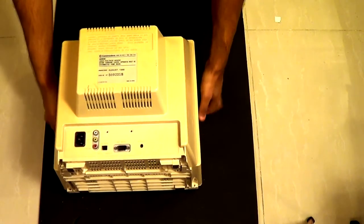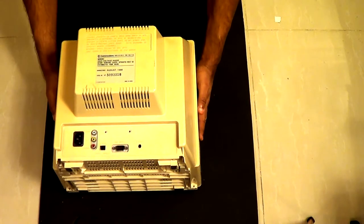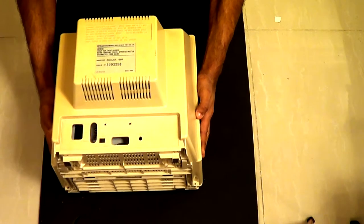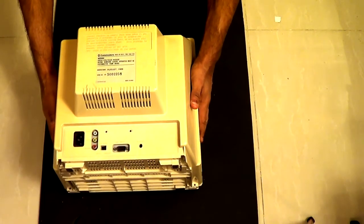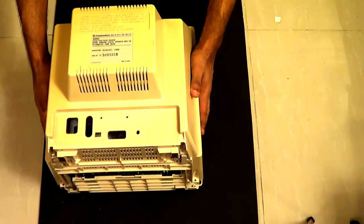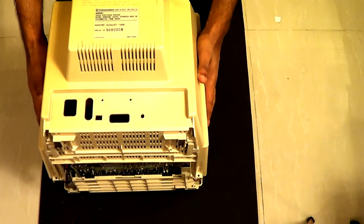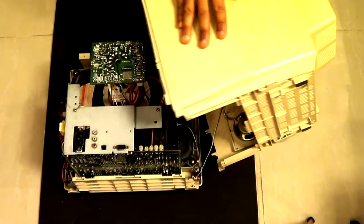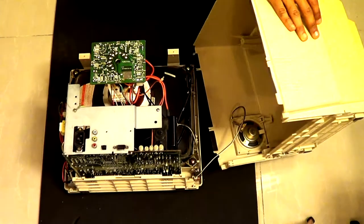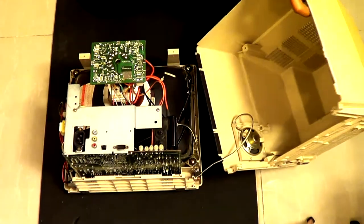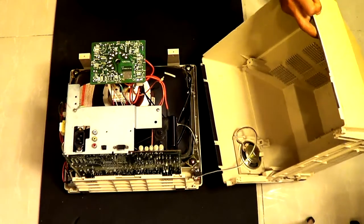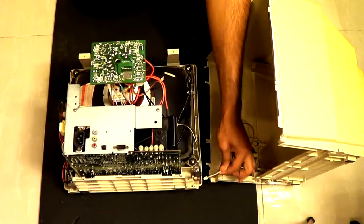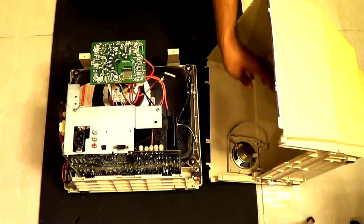Once we've removed the screws, be sure to lift the back panel gently. Reason being is because of the mono speaker wires that are attached to the front panel of the CRT monitor, as we don't want to yank those carelessly. So just lift it up, set it down gently, and unplug the mono speaker wires that are connected to the front panel PCB board.